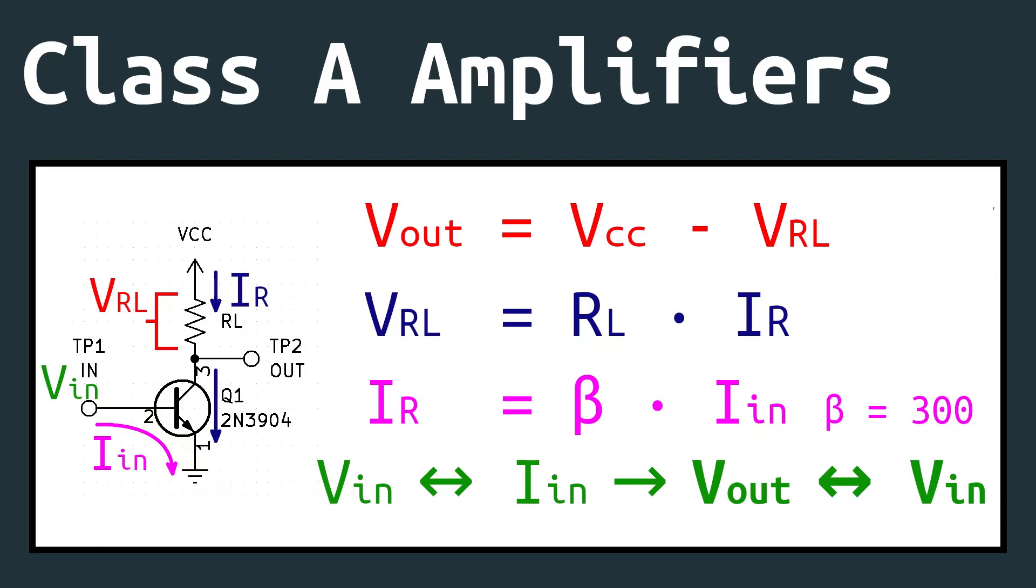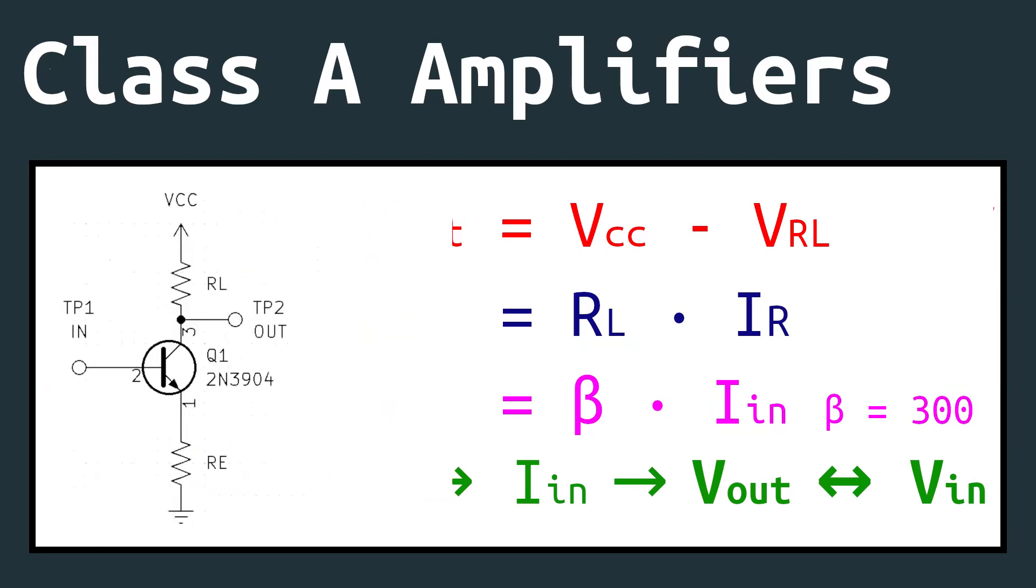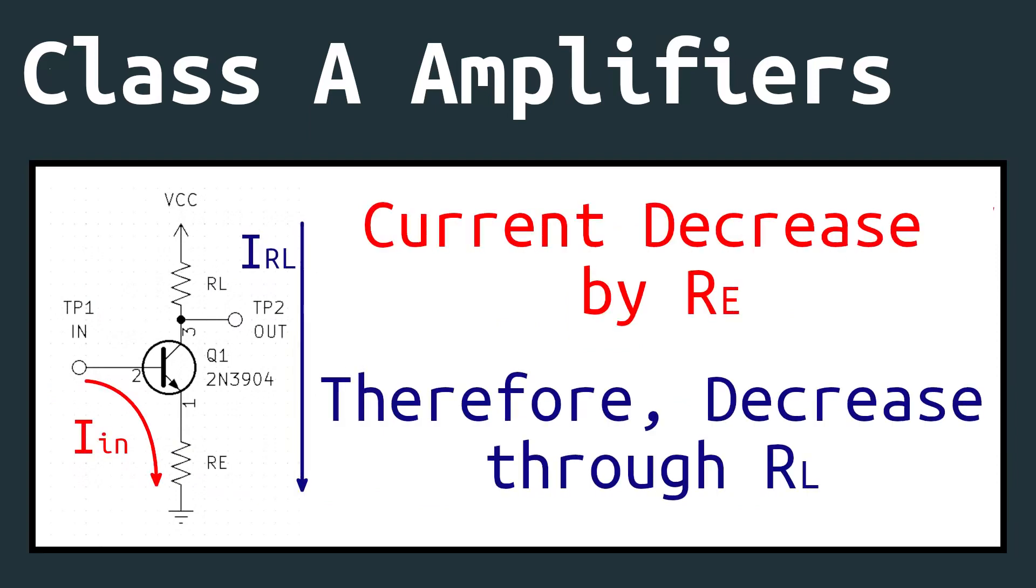The problem with this design right now is that most transistors have a gain that is much too high to be useful for audio applications. And that's where we can add a second resistor to the bottom. This resistor will decrease the amount of current that the input voltage will create. And this essentially adds a dividing factor to the current amplification.